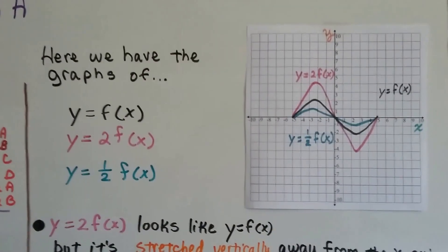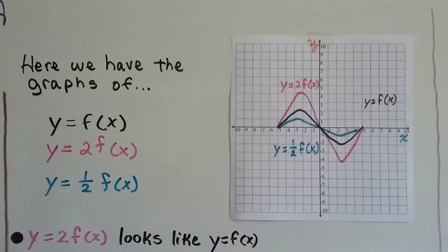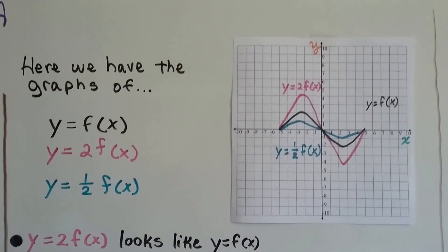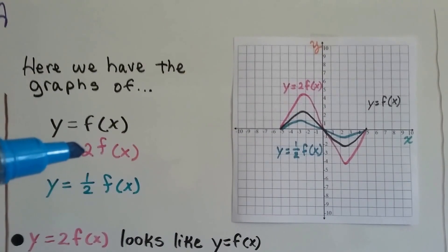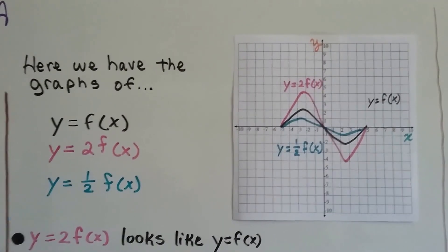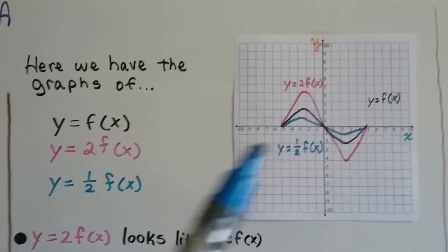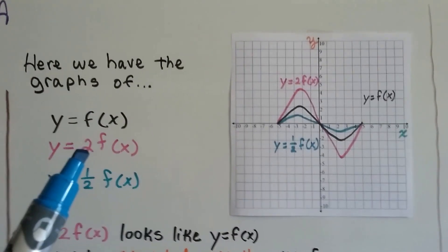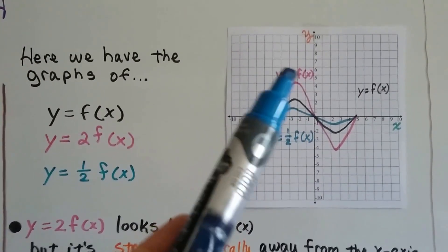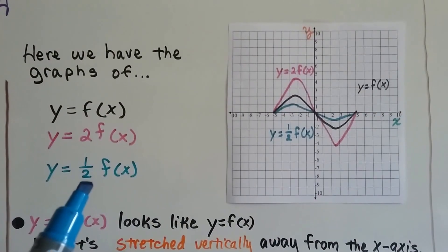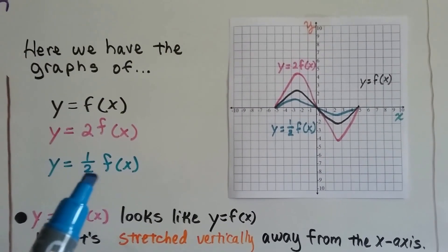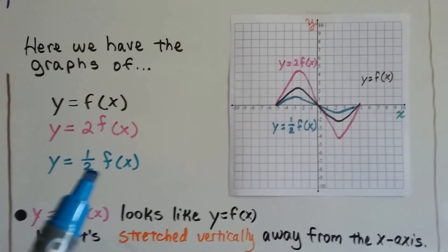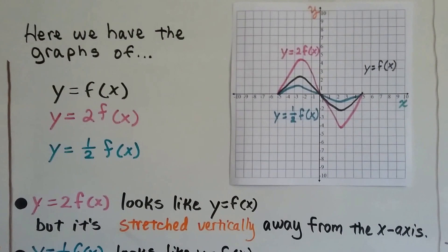Here we've got this graph, and we've got y equals f(x), and then we did 2, and then we did a half. You can see what happened when we multiplied it by 2. And when we divided it — or multiplied it by half — it got smaller.